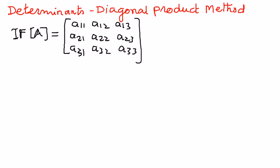And this A11, A12, A13, or A21, A22, A23, or A31, A33, means it is indicating the location of that element. A11 means first row, first column. A33 means third row, third column, and so on.